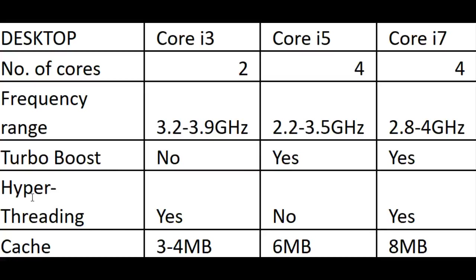The next feature is hyper-threading. In the simplest terms, hyper-threading basically doubles each core. The i3 has hyper-threading, so the computer will see its two cores as four. The i5 does not have hyper-threading, so it sits at its four initial cores. The i7 has hyper-threading, so Windows will see it as eight cores.